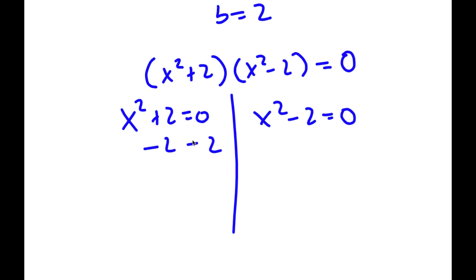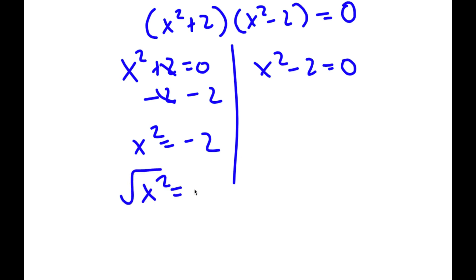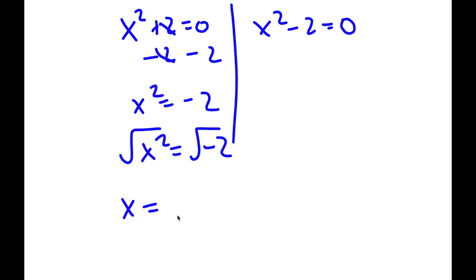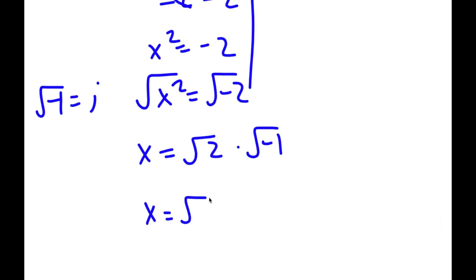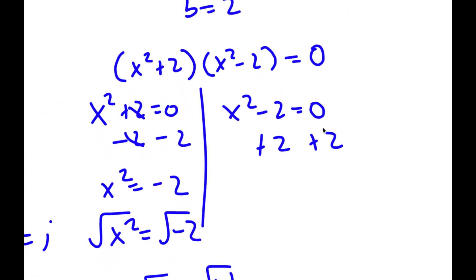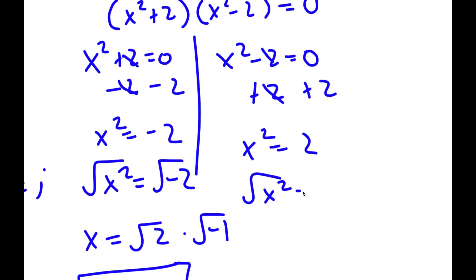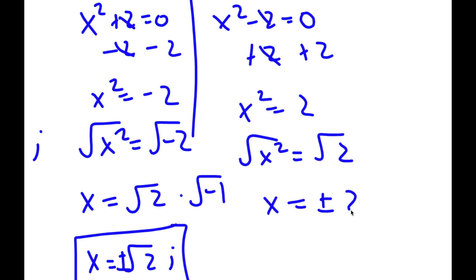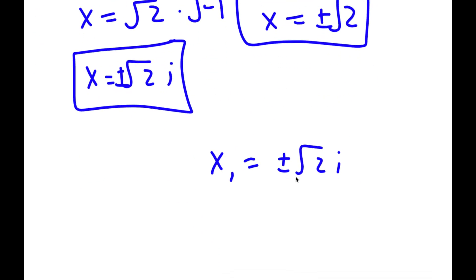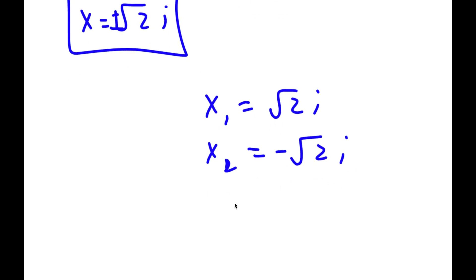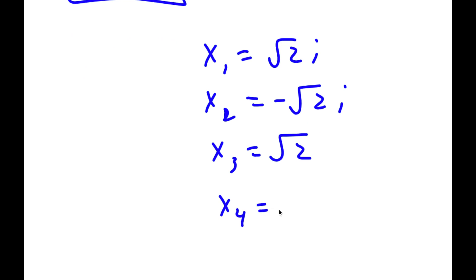For x squared plus 2 equals 0, I subtract 2 on both sides and I have x squared is equal to negative 2. Taking the square root of both sides, the square root of x squared is x, and the square root of negative 2 is the square root of 2 times the square root of negative 1. The square root of negative 1 is equal to i, so x is equal to plus or minus square root of 2i. For x squared minus 2 equals 0, I add 2 on both sides — x squared equals 2 — and taking the square root gives x equals plus or minus square root of 2. So my four solutions are x equals square root of 2i, x equals negative square root of 2i, x equals square root of 2, and x equals negative square root of 2.